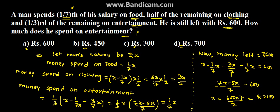Money spent on entertainment will be 1/7 of 2100, which is equal to rupees 300. So the money spent on entertainment is rupees 300 — option C is the answer. Thank you.